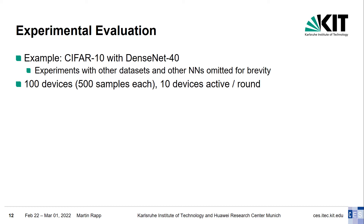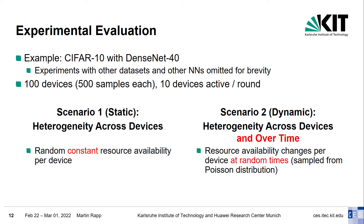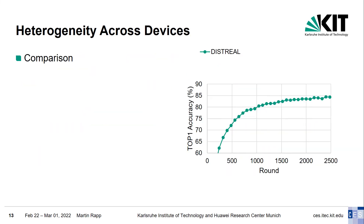We evaluate our technique in simulation. The following slides show results with the CIFAR-10 dataset and DenseNet-40 image classification network; results with other datasets and networks are presented in our paper. We use 100 devices with CIFAR-10, where 10 devices are active in each round. We study two main scenarios. The first scenario considers static heterogeneity among devices, where each device has a randomly selected but constant resource availability level. The second scenario is our main scenario, which additionally considers heterogeneity over time. We have repeated each experiment with three random seeds and report only the average accuracy values; the standard deviation is small and plays a minor role.